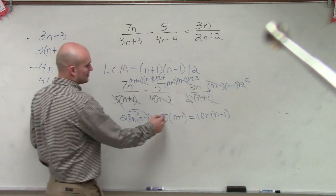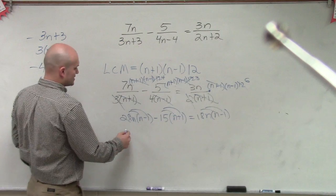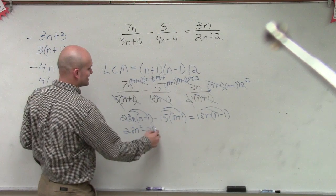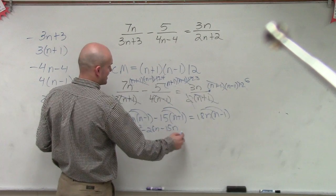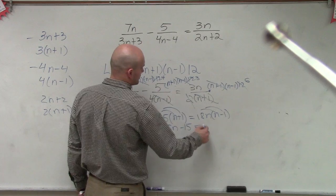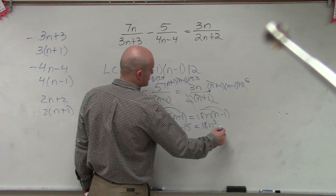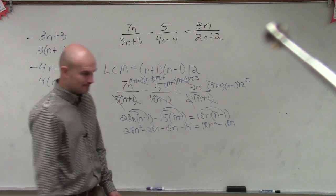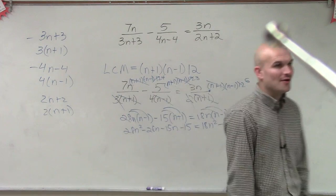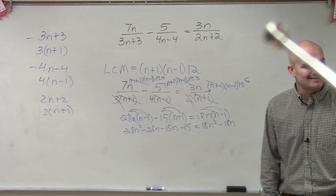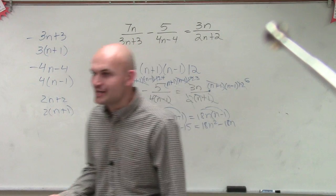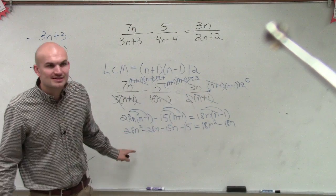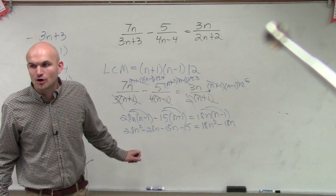So now, we need to apply distributive property. So this is 28n squared minus 28n minus 15n plus 15 equals 18n squared minus 18n. So how are we going to solve our variable n? The last example was pretty basic because it was linear. But now, we have an n squared. So that's going to tell us it's going to be a what type of equation? Quadratic.